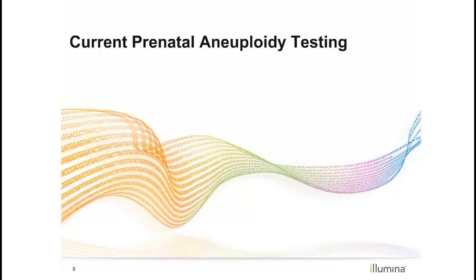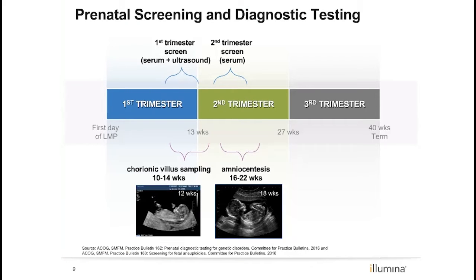Now that we've reviewed basic statistical terminology, let's review the different aneuploidy screening and testing options currently available to patients. There are many options available during pregnancy for the detection of aneuploidy, and most are dependent on gestational age. Tests can be a combination of a blood sample with or without ultrasound and/or invasive diagnostic testing. Physicians choose which test to offer based on clinical guidelines or the patient's pregnancy or family history.